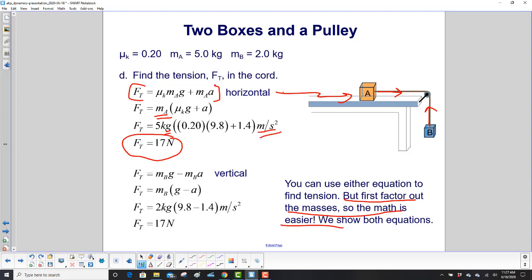Then we do the vertical equation and we get this equation. Once again, we factor out the mass. So it looks like this would be the easier one to use because we don't have to worry about the coefficient of friction. And as hopefully expected, we get the same tension force.